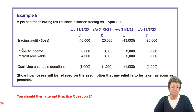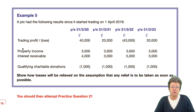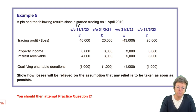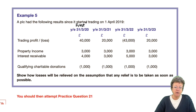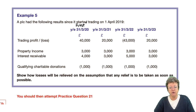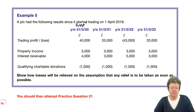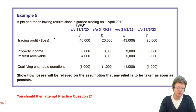So we have Example 5. The following results started to trade on the 1st of April 2019. This is the first set of accounts — doing very well. Second set, not so well. Third set — a loss has been made. Fourth set, back in a profit situation, with property income, interest receivable, some QCDs.